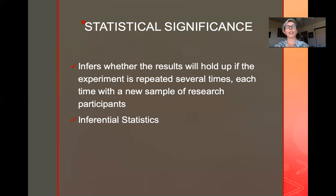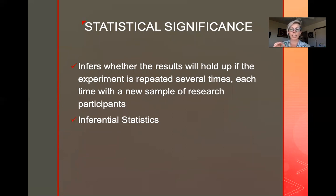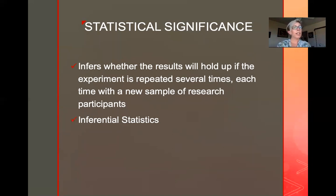If I'm really confident, I can tell you that if we were to redo this many different times with different participants, we're going to find the same thing. When we're talking about statistical significance, we're talking about our assuredness — how sure we are that our decision to reject or retain the null hypothesis is correct. In research, we're either going to stick with the null that there is no relationship between these variables, or say we have a good case for suggesting that there is some kind of relationship.